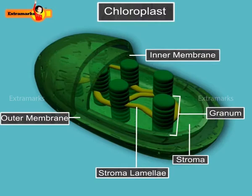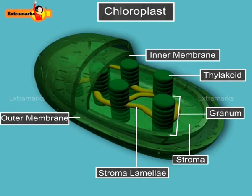Stroma is a denser, colourless and granular substance, while grana are made up of flattened, membranous sacs called thylakoids, which are arranged like stacks of coins.